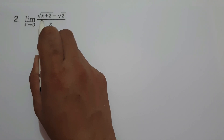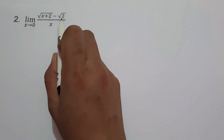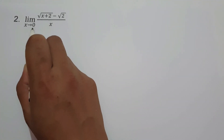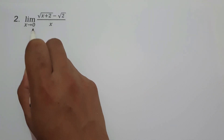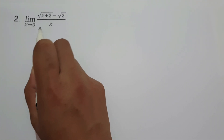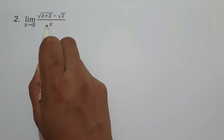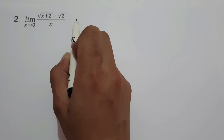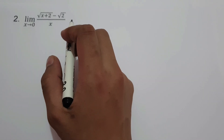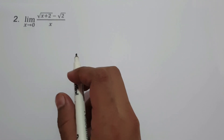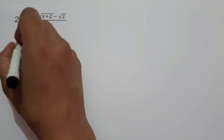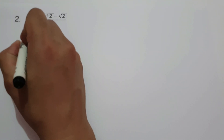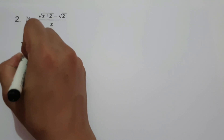On example number 2, what is the limit of square root of x plus 2 minus square root of 2, all over x, as x approaches 0? Since we cannot factor the given expression directly, and if we substitute the value of x, we are going to have 0 over 0.